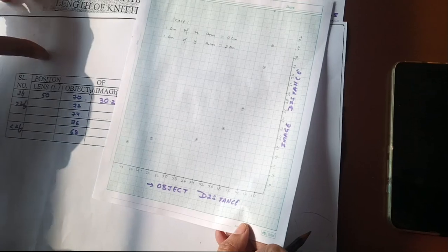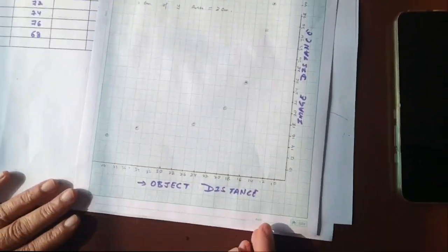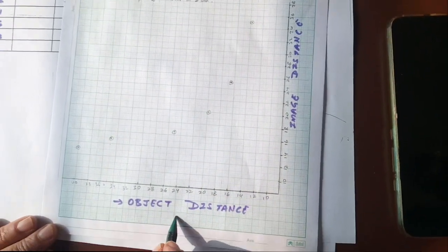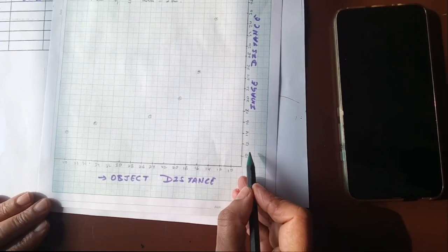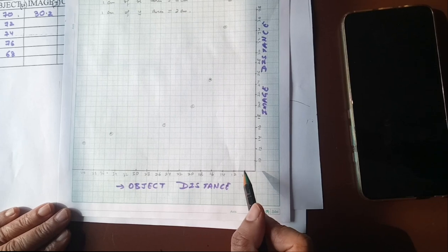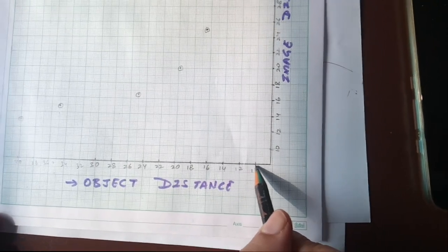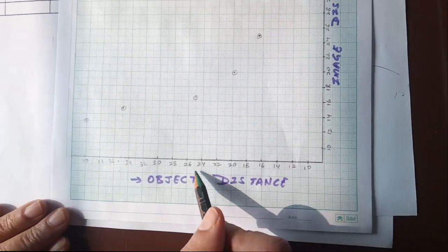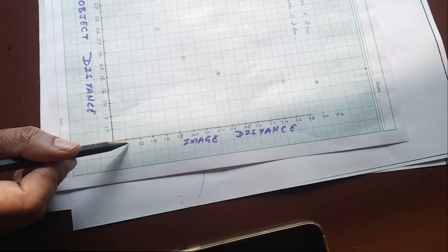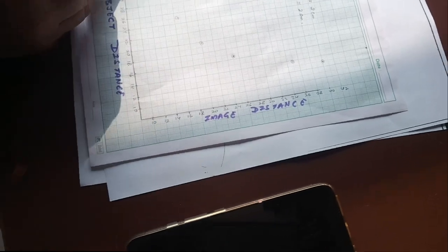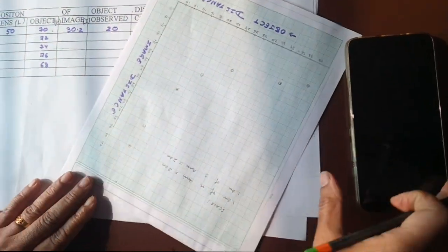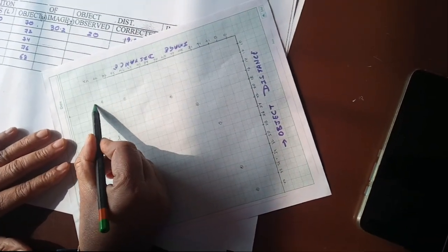After taking readings beyond 2f and between f and 2f, plot the graph between object distance and image distance. The object distance u is on the x-axis and image distance v is on the y-axis. This will be in the second quadrant because for a convex lens u is negative and v is positive. On the x-axis start from 10: scale 1 cm = 2 units, so 10, 12, 14, 16, 18. Start the y-axis from 10 as well with the same scale.